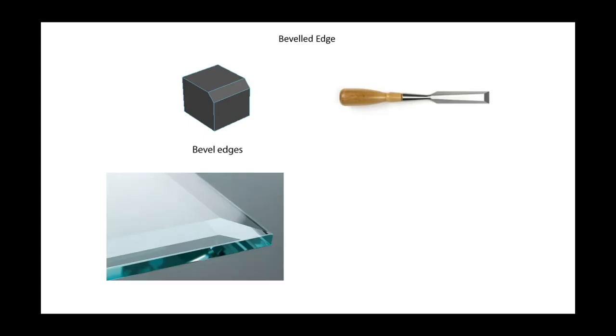First let's recall what a bevel is. You're likely familiar with a beveled edge as sloping away from its surface as shown here. It can be found in chisels, glass, and wood.